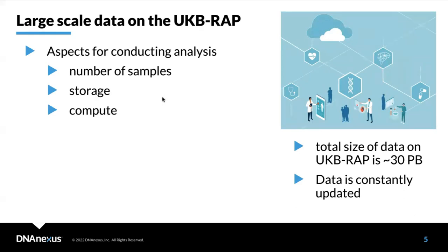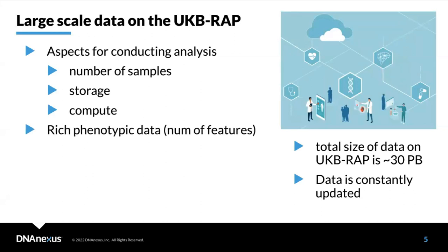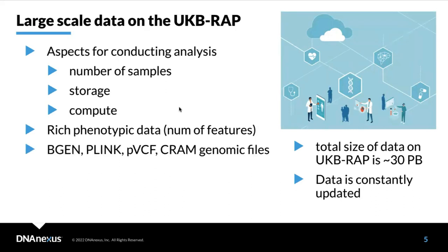When we talk about UKB RAP data, we are working with approximately 30 petabytes of data in total. Data is constantly updated so you can always get the newest release. This is not just about raw file formats such as genomics or imaging — you can also work with many phenotypic files. It's a very rich resource of data, typically available in the form of a database for your analysis. For genomic files on UKB RAP, there are various types — for example, bgen, plink, pVCF, or CRAM — and you can decide which to use for your use case.